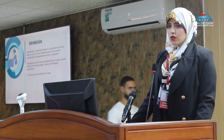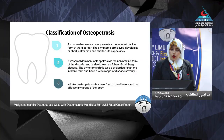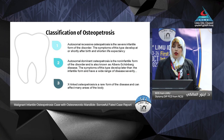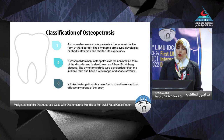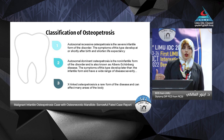Osteopetrosis is classified into three types. The autosomal recessive type, meaning both parents must be carriers, includes infantile malignant osteopetrosis. Symptoms are severe and life expectancy is short.